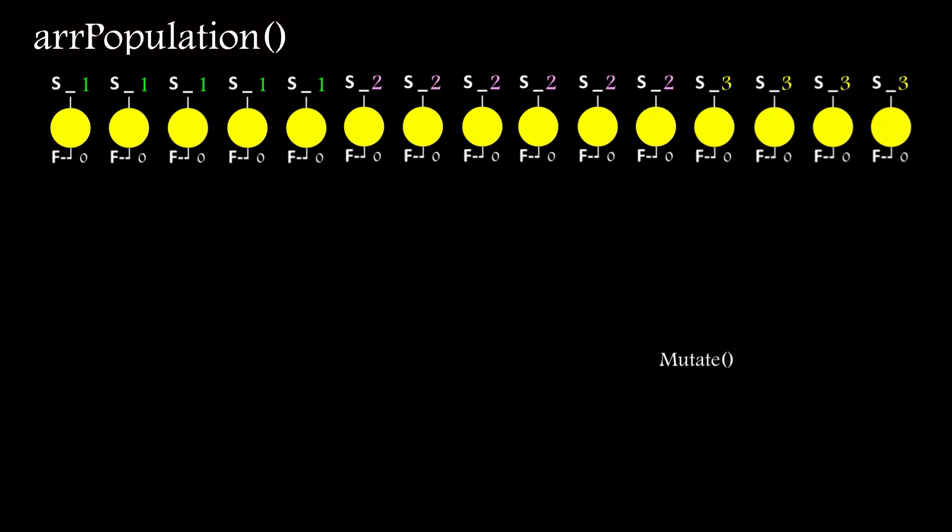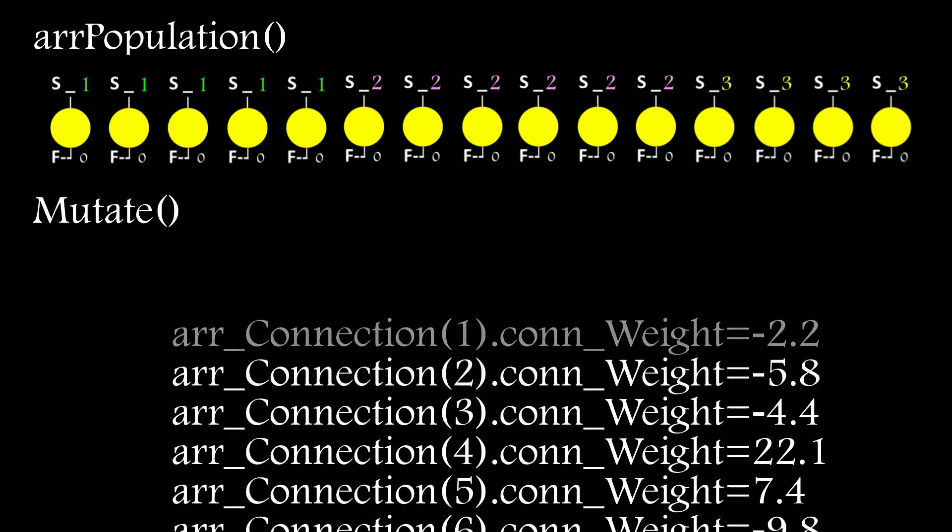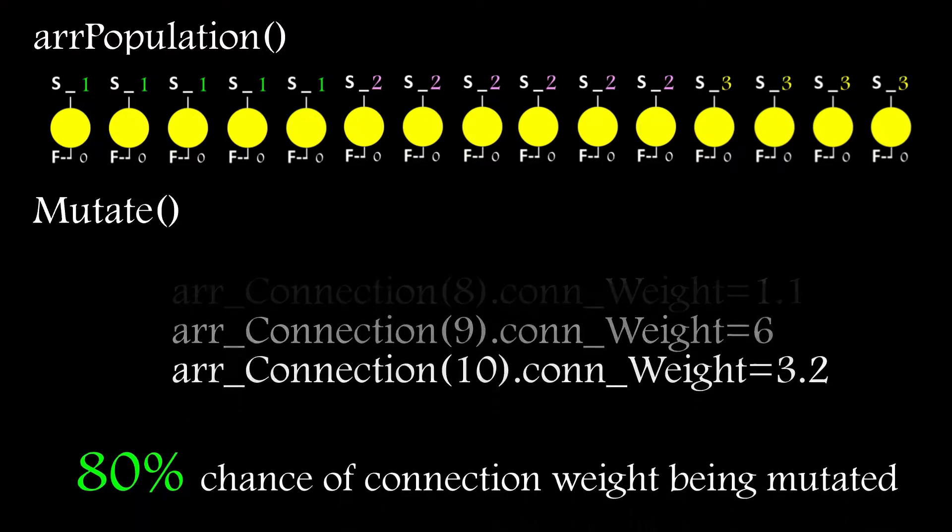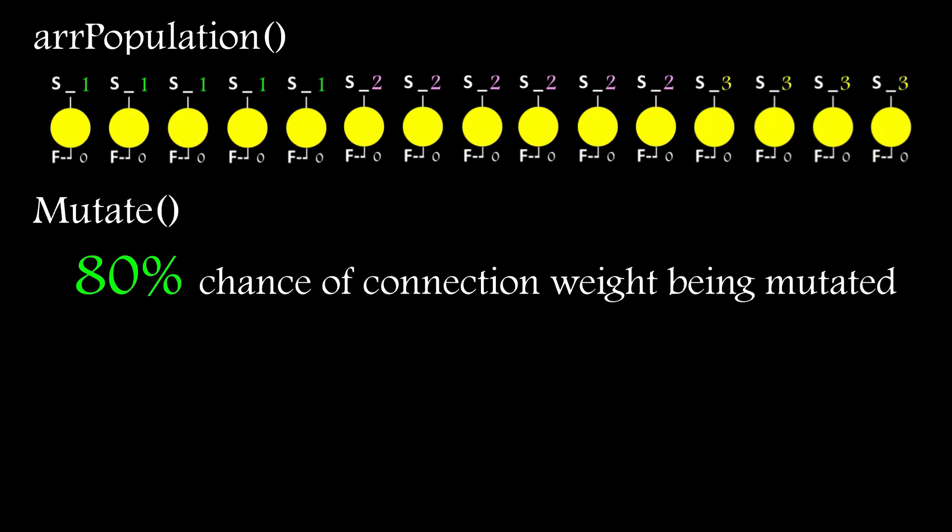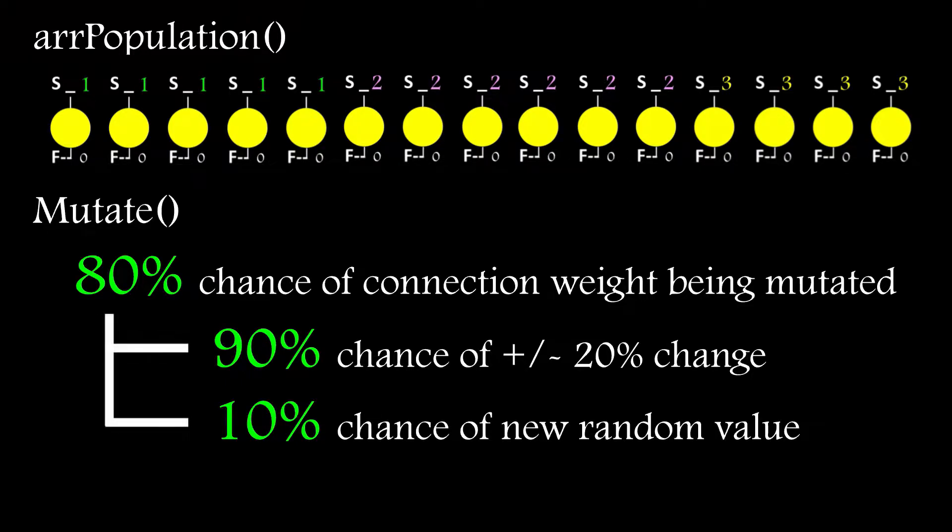For the weights, it's relatively straightforward. For the network involved, I set the chance of mutating its weights at 80% for exclusive or, and if it's selected for mutation, all you need to do is go through the connection array and modify the weight parameter for each connection. I set the chance of it being modified at 90%, which results in a plus or minus adjustment of 20%, and there's just a 10% chance of the connection weight being completely reset to a random value. So far so good.